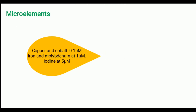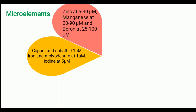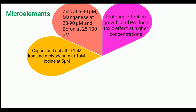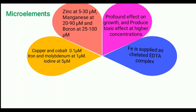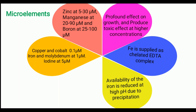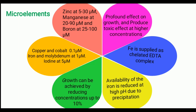Now we will see about micro elements. Copper and cobalt are generally added up to 0.1 micromolar. Iron and molybdenum are added up to 1 micromolar. Iodine is supplemented up to 5 micromolar. Zinc is added at 5 to 30 micromolar, manganese up to 90 micromolar, and boron at 25 to 100 micromolar. These micro elements have a profound effect on growth and produce toxic effects at high concentrations. Iron is supplemented as a chelated EDTA complex since it has a toxic effect, and its availability is reduced at high pH due to precipitation. Growth can be achieved by reducing micro element concentrations up to 10% for enhanced growth.